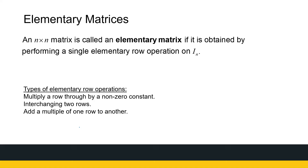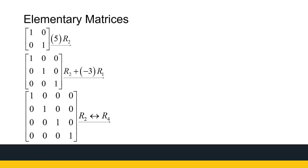An elementary matrix is a square matrix that I get by performing a single elementary row operation on the identity matrix. Just to remind you what the elementary row operations are: we can multiply a row through by a non-zero constant, we can interchange two rows, or add a multiple of one row to another.